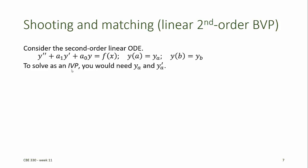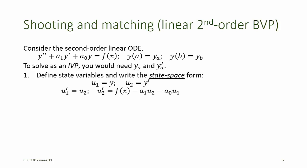To solve this as an initial value problem, we would need to know y at a and y' at a. First, we'll define the state variables and write the state space form. We'll call the state variables u, so u1 is y and u2 is y'. The derivative u1' is, of course, u2, and u2' is obtained by solving the defining equation for y double prime.